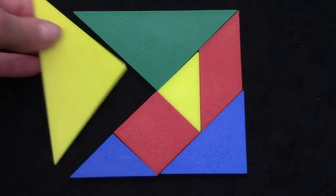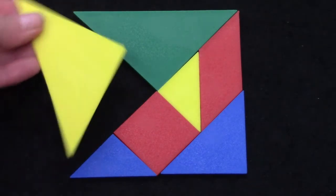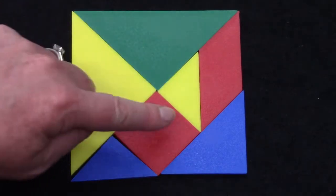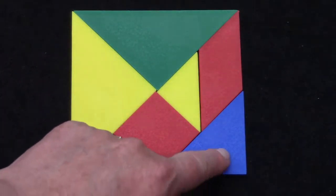These are called Tangram pieces. It's a puzzle that has seven pieces: one, two, three, four, five, six, seven.